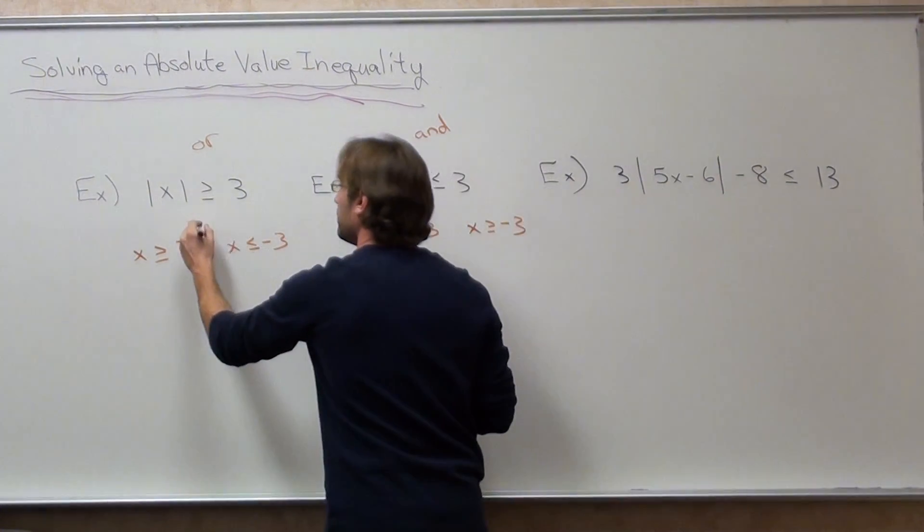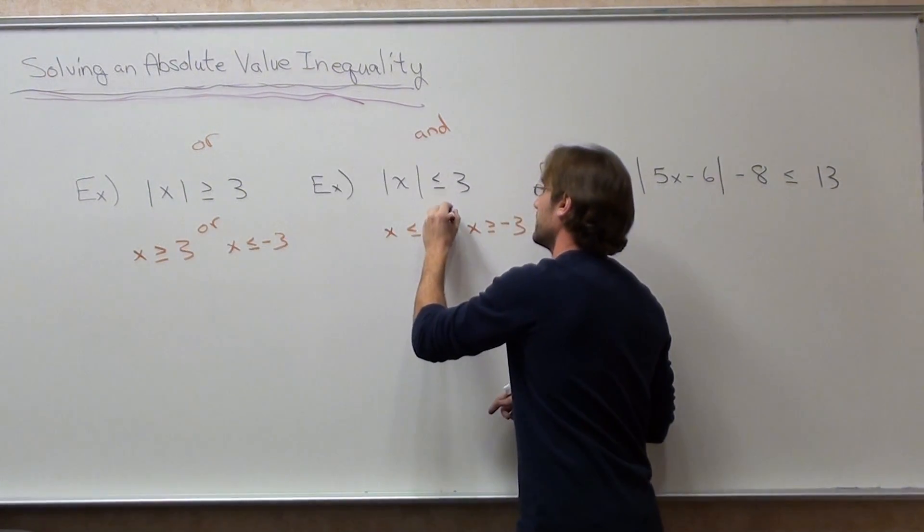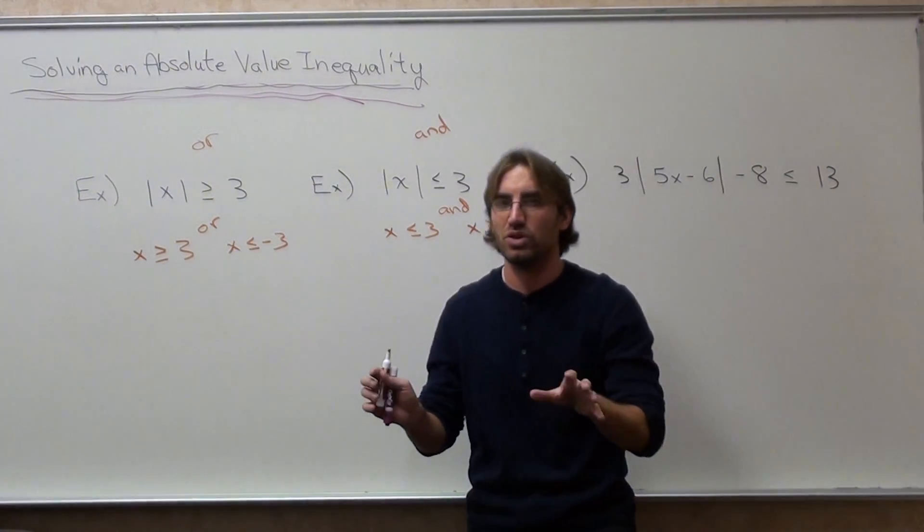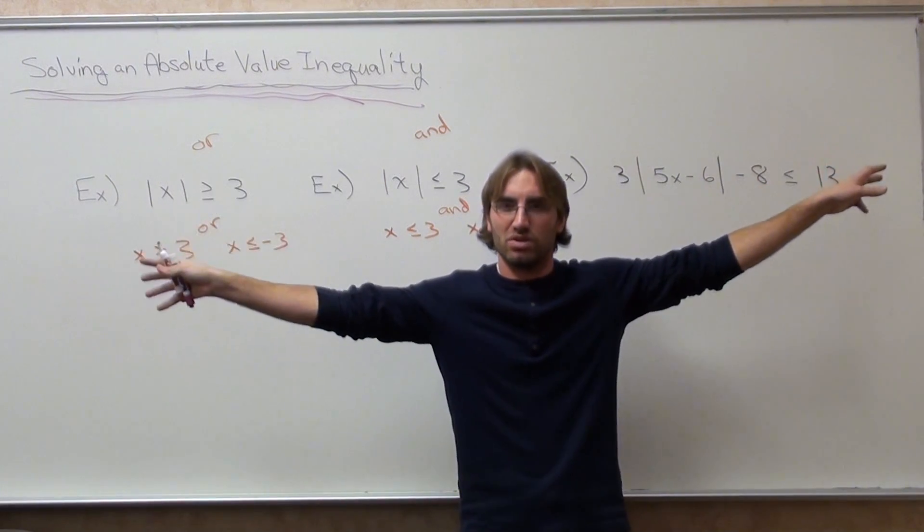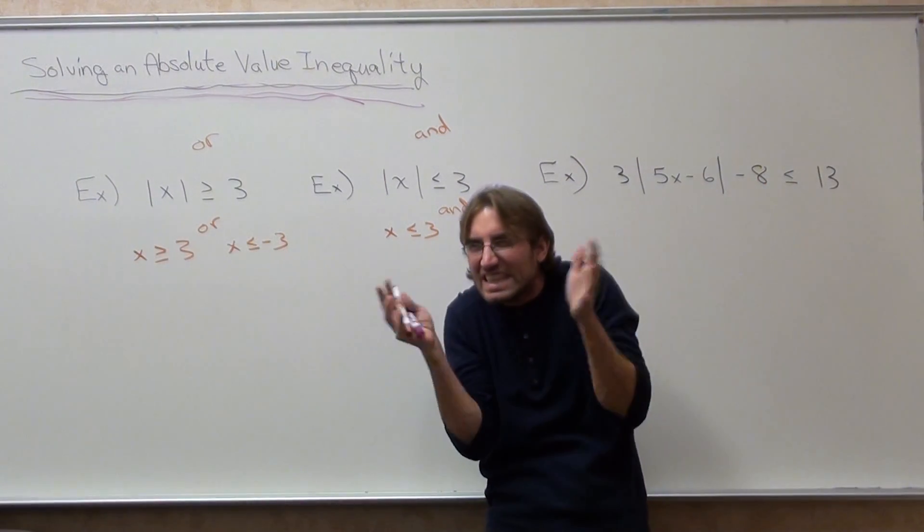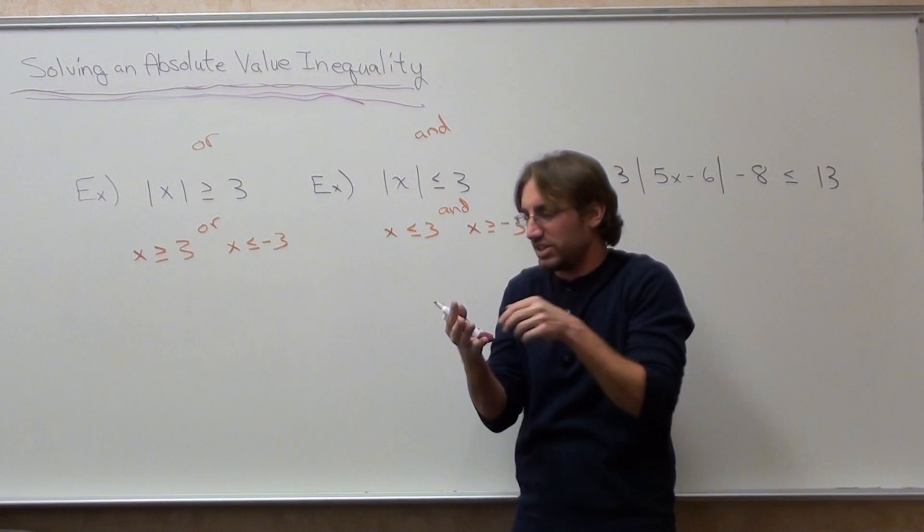This is an OR problem. This is an AND. And I'll prove it right now. An OR problem, when you graph it, I can have this one, or I can have this one. They extend in different directions. An AND problem says, I want this and this. I want this and this. Which means it's cluttered together.